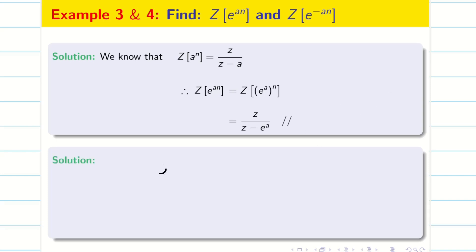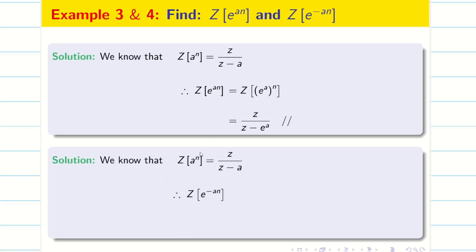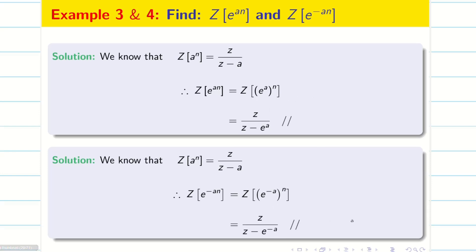Similarly, for e^(-an), Z of e^(-an) is nothing but Z of (e^(-a))^n. Just applying the formula, we get the answer: Z divided by (Z minus e^(-a)).